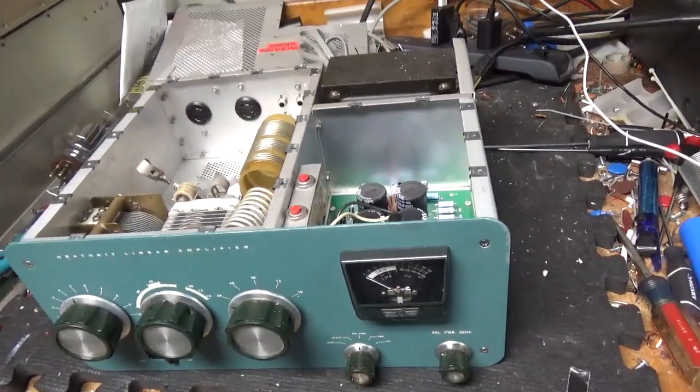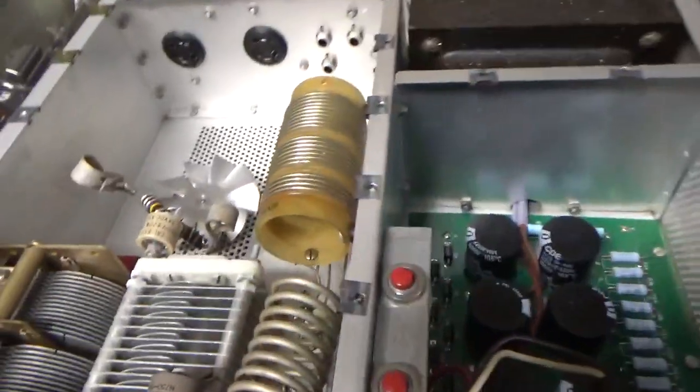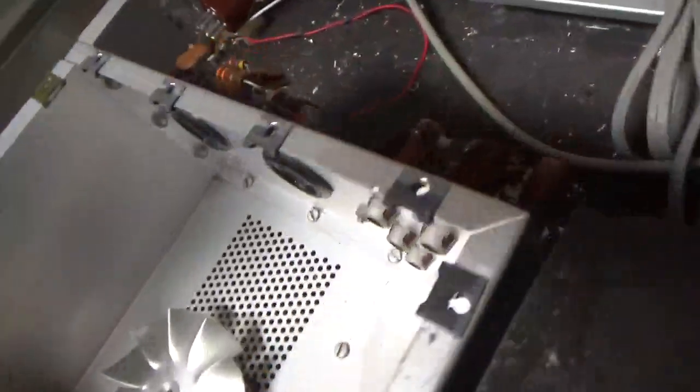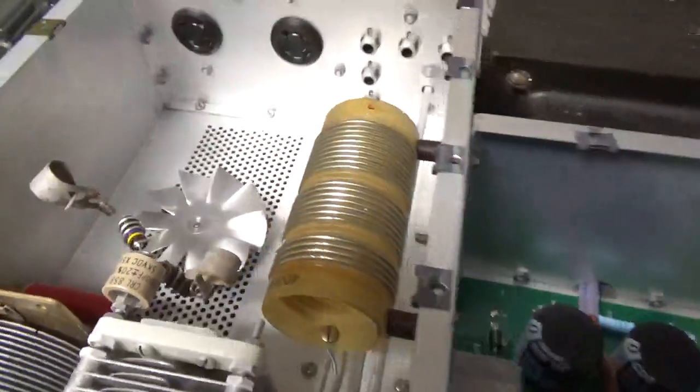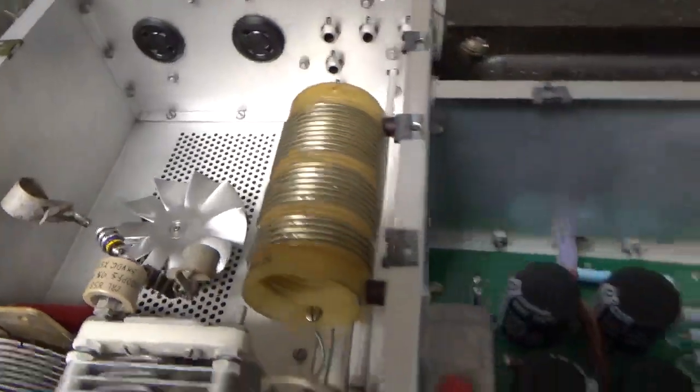So I'm going to go through it, change the parasitic suppressor resistors, grid loading resistors, their original mica caps, compress the socket clips, clean the socket clips, clean the band switch, clean the other rotary switch up here.